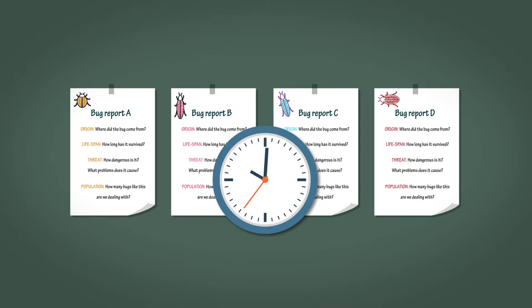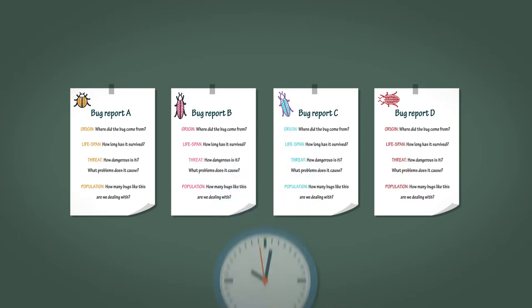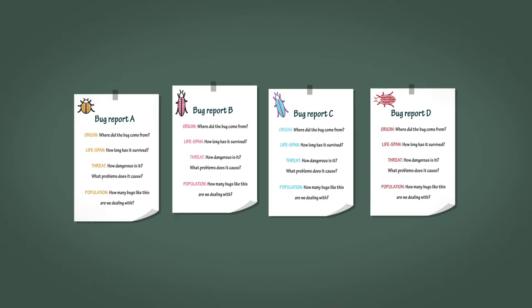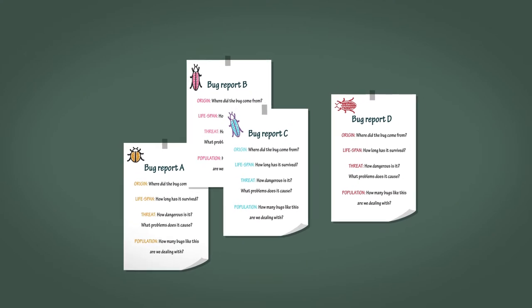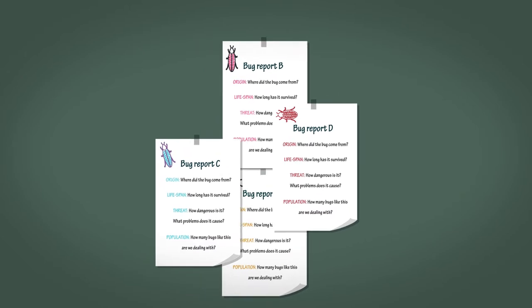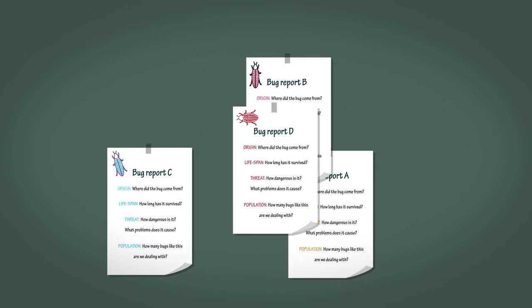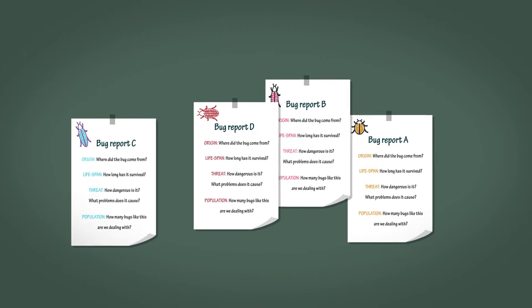When the group have had chance to read and enjoy the types of bugs that are threatening us, ask the team to move the reports into threat order. By that we mean order the bug reports from left to right on the wall with the most threatening on the left down to the least threatening on the right.